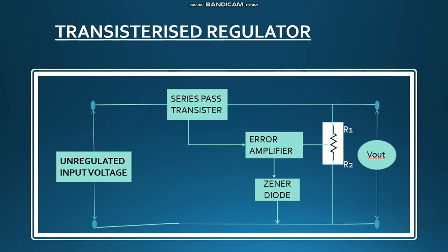The block diagram of the transistorized regulator consists of the main component, i.e. the transistor. A series pass transistor is present in the block diagram, which is a power transistor. In the case of the error amplifier, one more transistor is present, and at the output the potential divider arrangement R1 and R2 is present.